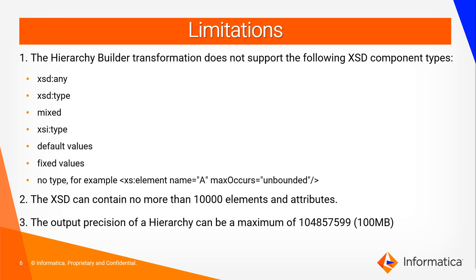Now to look into the limitations of this particular transformation. The Hierarchy Builder transformation does not support the following XSD components: XSD any, XSD type, mixed components, XSI type, default values, fixed values, or no-type elements in XSD. Also, the XSD used to create the hierarchy schema cannot have more than 10,000 elements. The last limitation currently in the Hierarchy Builder transformation is that the output precision of a hierarchy created can be a maximum of 100 MB — IICS will not be able to increase the precision beyond that at this point.